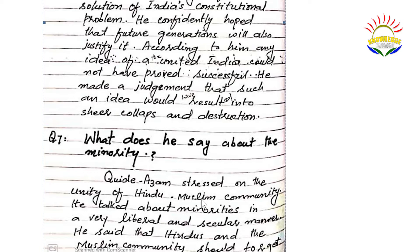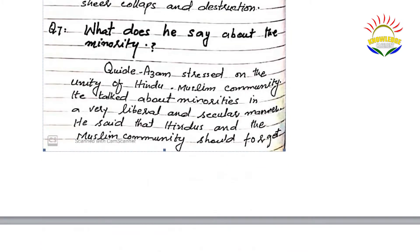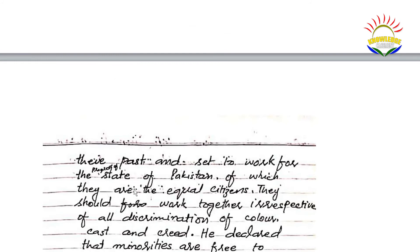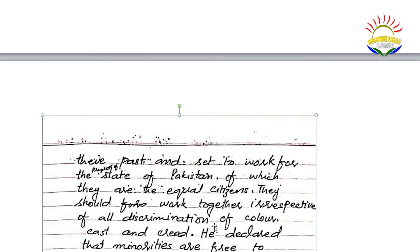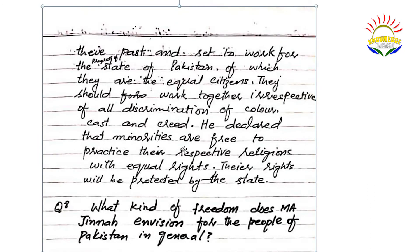Question number seven: what does he say about minorities? Quaid-e-Azam stressed on the unity of Hindu-Muslim community. He talked about minorities in a very liberal and secular manner — liberal meaning with open-mindedness, and secular meaning not favoring any one religion. He said that Hindus and the Muslim community should forget their past and set to work for the progress of the state of Pakistan, of which they are equal citizens. They should work together irrespective of all discrimination of color, caste, and creed. He declared that minorities are free to practice their respective religions with equal rights, and their rights will be protected by the state.